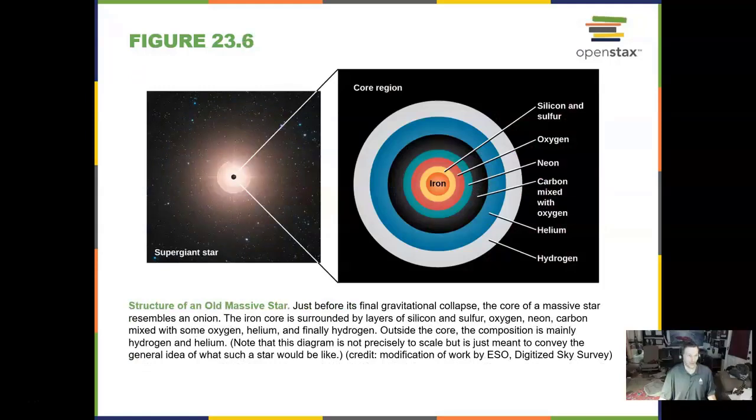Here is the structure of an old massive star. We have talked before about these shells inside the star, and you go from hydrogen to helium to carbon, oxygen, neon, silicon, and then iron.